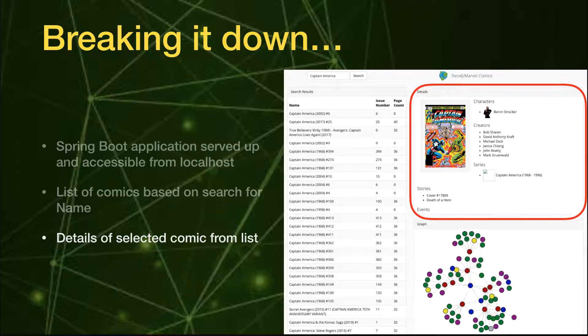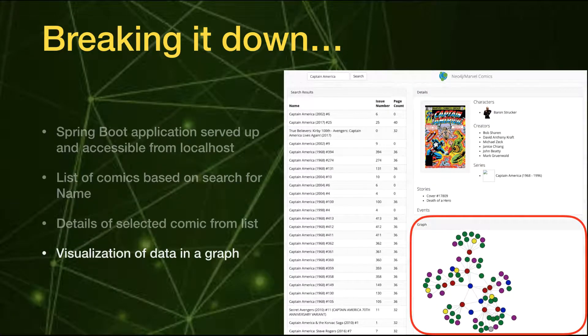You're going to see an image of the comic, maybe the characters involved, who created or wrote it, the series, stories, events, and other relevant data. Finally, we have a visualization of the data in the graph, so you can see how each node — each comic or character — ties with other entities in the database.